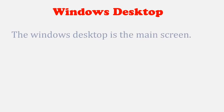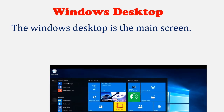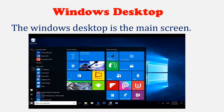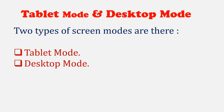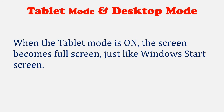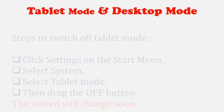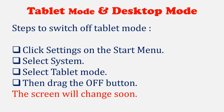Windows Desktop. The Windows desktop is the main screen. There are two types of screen modes: tablet mode and desktop mode. When tablet mode is on, the screen becomes full screen just like the Windows Start screen. To switch on tablet mode, click Settings on the Start Menu, select System, select Tablet Mode, then drag the off button and the screen will change.